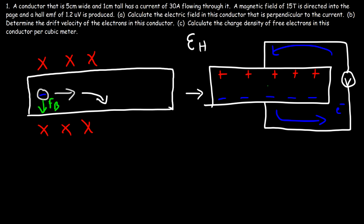There is also an electric field that emanates from the positive charge and flows toward the negative charge. In part A we need to calculate that electric field in the conductor, which is perpendicular to the current. If the electrons are moving toward the right, conventional current is flowing toward the left.